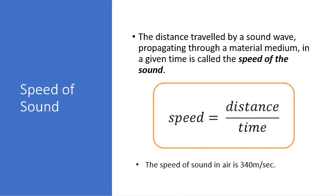Next is speed of sound. What is the speed of sound? The distance traveled by a sound wave propagating through a material medium in a given time is called the speed of sound. And it can be calculated by the formula speed equals distance upon time. What is the SI unit of speed? It is meter per second. When we talk about air, the speed of sound in air is 340 meter per second.